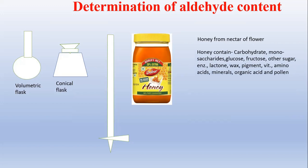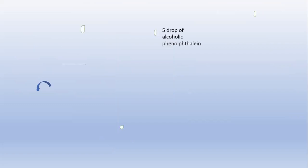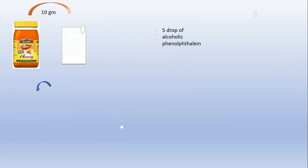Honey also contains vitamins, amino acids, minerals, organic acids, and pollen grains. These are the various components present in honey, and these are to be utilized in the determination of the aldehyde content. To begin, collect one beaker of 100 ml capacity, and to that beaker you have to transfer near about 10 grams of honey which should be available in the market.